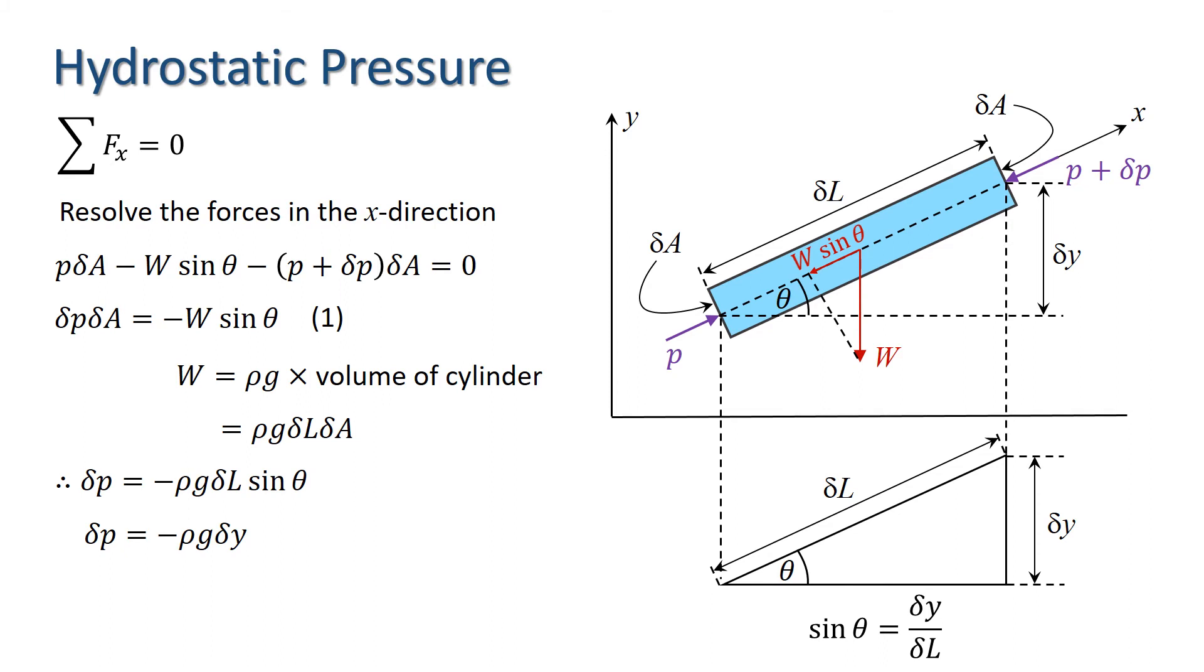If we now let delta Y tend to zero, making our elementary volume shrink to a point, we can see that the gradient dP by dY equals minus rho G, which is constant provided our fluid has a constant density. Integration yields the equation P equals minus rho G Y plus a constant.